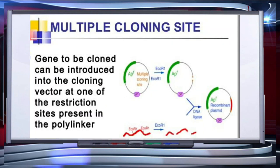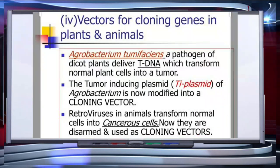Under selective conditions, only cells that contain plasmids with selectable markers can survive. Cloning sites are required to link the alien DNA with the vector. The vector requires very few or single recognition sites for the commonly used restriction enzymes. The presence of more than one recognition site within the vector will generate several fragments, leading to complications in gene cloning.